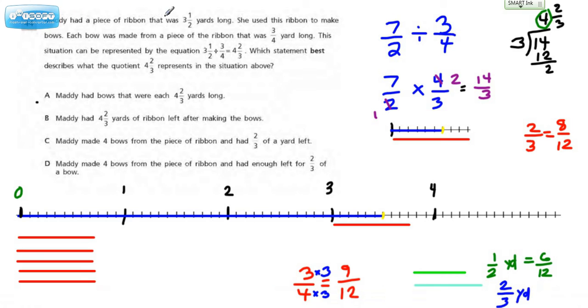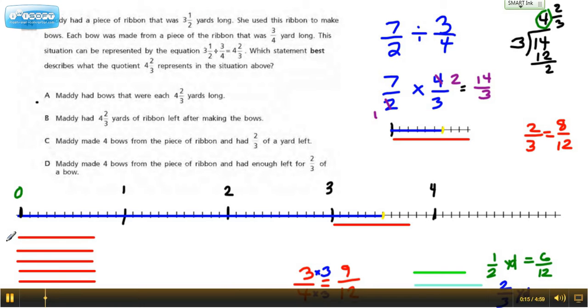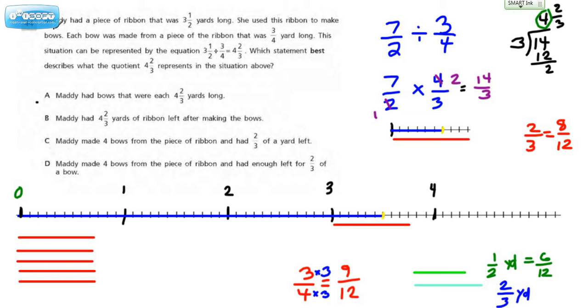It says Maddie had a piece of ribbon that was 3½ yards long, which by the way I have represented here in blue. That's 3½. She used this ribbon to make bows.